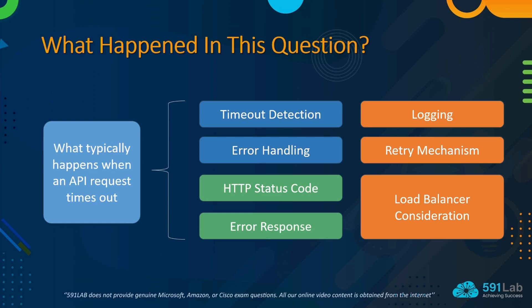The next key part is timeout in HTTP. When an API request times out in a REST API system, it means the server hasn't been able to respond within a specific time frame. This timeout could occur due to various reasons such as heavy server load, network issues, or inefficient processing of the request. The server monitors incoming requests and starts a timer when the request is received. This timer is set to a predefined threshold — usually in milliseconds — beyond which the request is considered to have timed out.